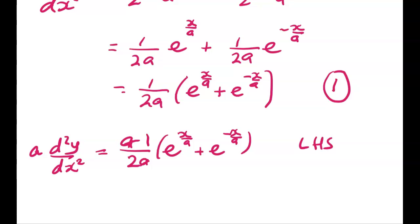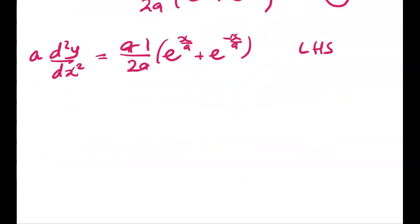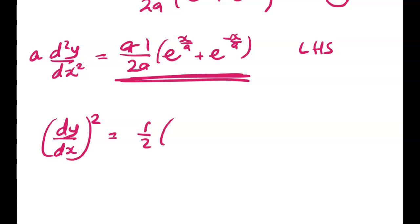Now let's work with the right-hand side. This is what we're aiming for. We're going to try and get the right-hand side into that form. So dy by dx squared is equal to 1 half, e to the x on a, minus e to the next over a, squared squared, which gives me 1 quarter.